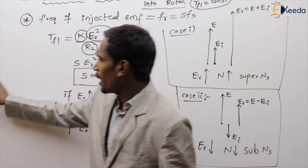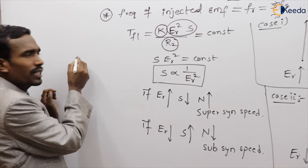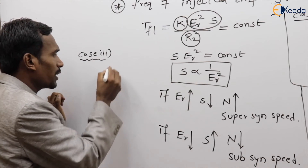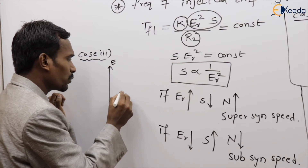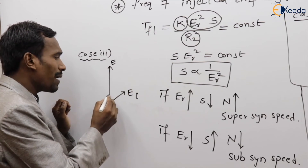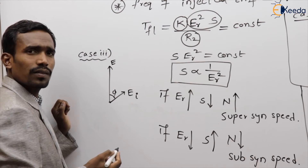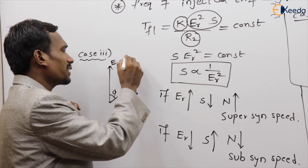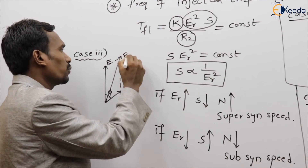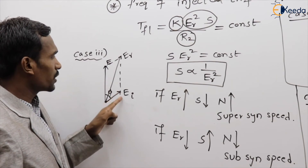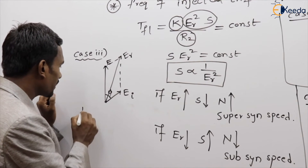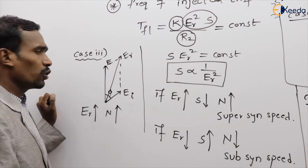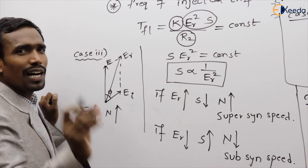Case three: the EMF is injected into the rotor with some angle — not exactly in phase but at an angle phi. The resultant ER is the vector sum of the actual rotor EMF and the injected EMF. In this case ER increases, so speed increases — super-synchronous speed. Importantly, when EMF is injected with some angle, we can also control the power factor.